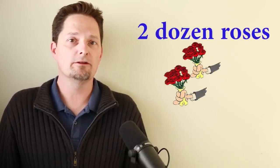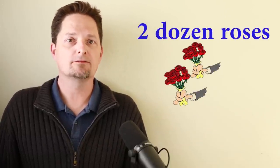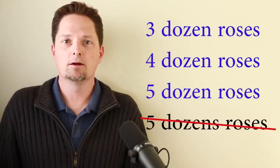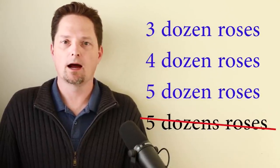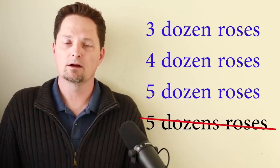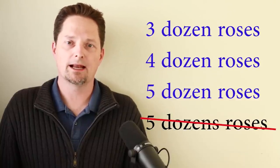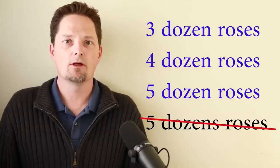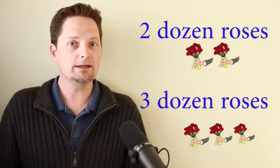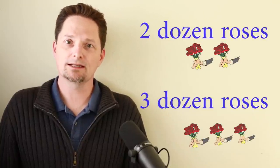What if you have more than twelve? If you have twenty-four, you can say 'two dozen.' I have two dozen roses. Or three dozen, four dozen, five dozen. But we cannot use S here — I cannot say 'dozens.' Even though it's more than one dozen, we cannot put S on dozen; it has to stay singular. Five dozen roses, three dozen roses. Two dozen roses is twenty-four roses; three dozen roses is thirty-six roses.